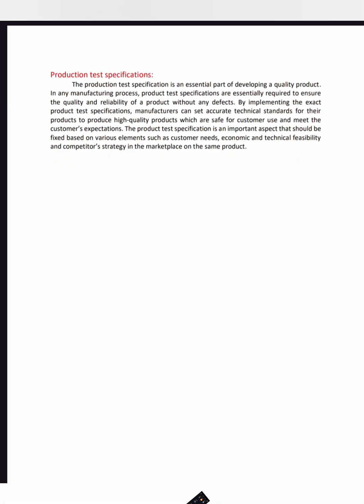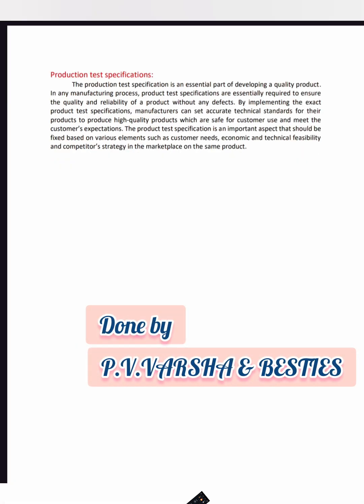Next, production test specification. Production test specification is very essential in developing a quality product. Test specifications are the aim requirement for the manufacturing process. It shows the quality and reliability of a product and aims to save defects. By implementing this, the manufacturer has a scope of accurate technical standards. This specification shows various elements like customer needs, product economics, technical feasibility, competitive strategy, and marketing place.